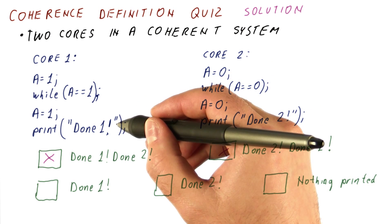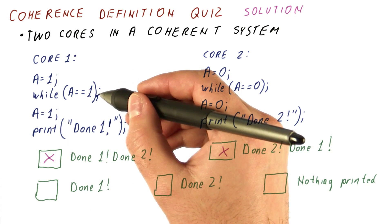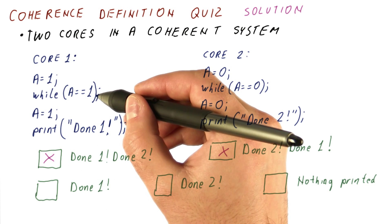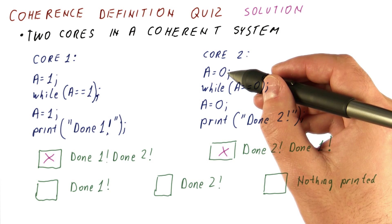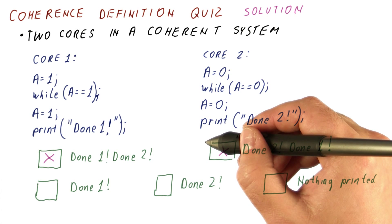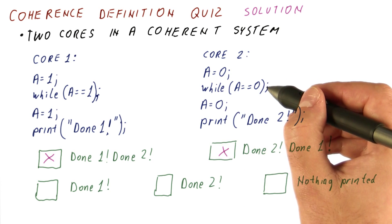Now let's see if it's possible for core one to never get to this point. For that to happen, core one needs to get stuck here in this while loop, which means that A needs to stay one forever. That can only occur if core two is done with its program, and the resulting value of A is still one. Or if core two also gets stuck here, and the resulting value of A is still one.